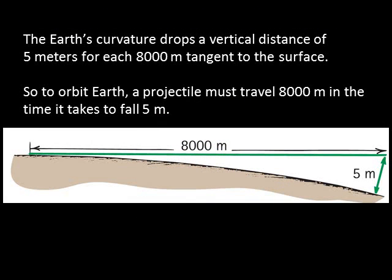Here's another way of seeing it. The Earth's curvature drops a vertical distance of 5 meters for each 8,000 meters tangent to the surface. So to orbit Earth, a projectile must travel 8,000 meters in the time it takes to fall 5 meters.